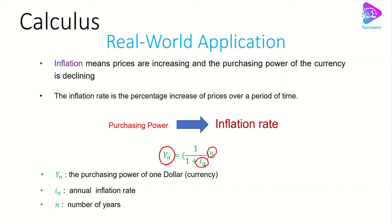And from here we can see easily the yn depends on ia which is the inflation rate. And this power is connected to how many years have been passed from that money that you have received. And from there you can say for example if you have one dollar how much is the purchasing power of that one dollar after 10 years.